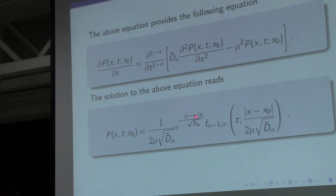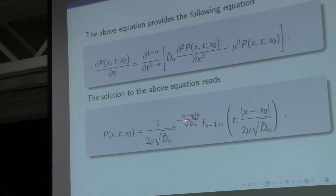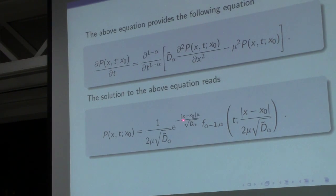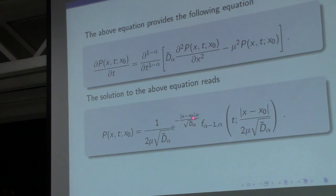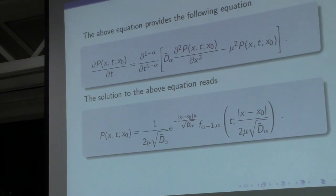The solution of this equation is as follows. It is similar to the previous one, but the damping exponential factor is controlled by a function of x — the distance x minus x₀ between the initial and final positions.